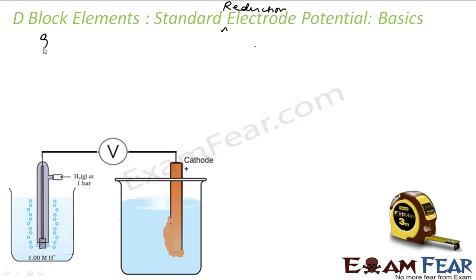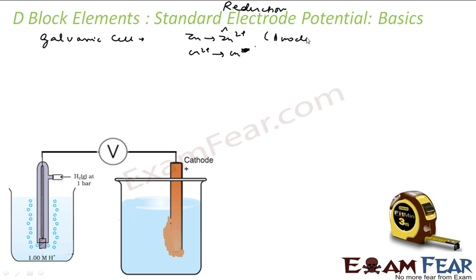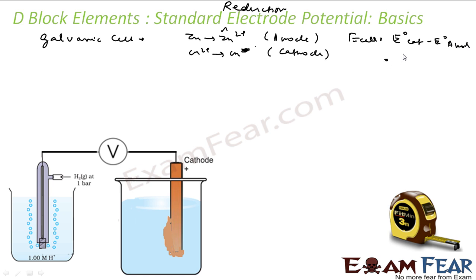If you see a galvanic cell — let's start with the galvanic cell. In a galvanic cell, you have zinc getting oxidized and copper getting reduced. Zinc is oxidized at the anode and copper is reduced at the cathode. The E of the whole cell is nothing but E⁰ of cathode minus E⁰ of anode — that is E_reduction of cathode minus E_reduction of anode.